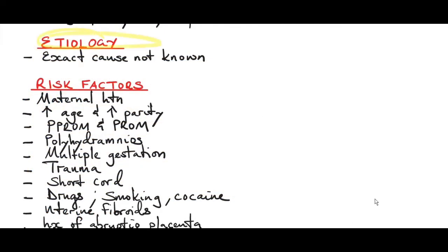The etiology of abrupta placenta: the exact cause is not known but there are associated risk factors. Maternal hypertension — chronic hypertension or preeclampsia — causes spasm of the spiral arteries, resulting in endothelial damage, rupture of the spiral arteries, and bleeding into the decidua basalis.